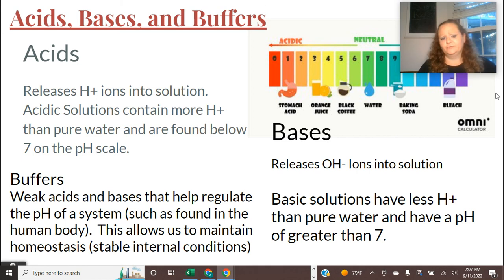So buffers are going to be weak acids and weak bases. And they actually, we have them in our bloodstream. It allows us to maintain homeostasis, those stable internal conditions. If we start to get a little too acidic, then a little weak base is going to come along. And when the acid and the base react to each other, one's releasing hydrogen, the other one's releasing hydroxide. What this does is this actually forms H2O or water. So they'll form water together. And so that's why these buffers are really important.